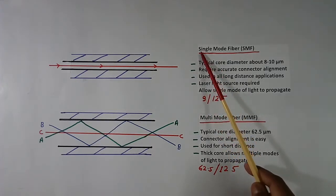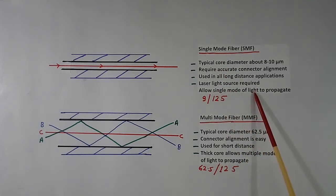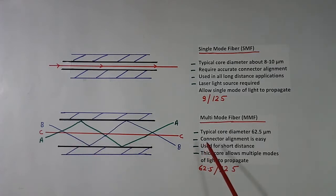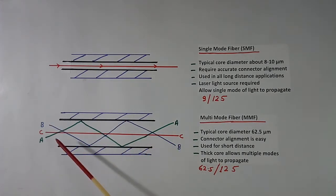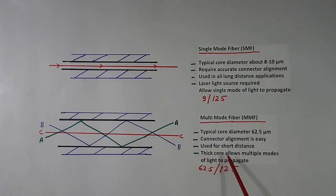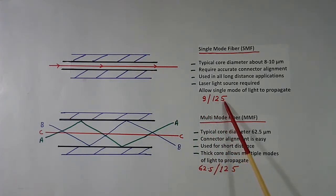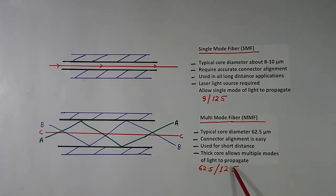Another difference: in single mode fiber, only a single mode of light propagates straight through. In multi mode fiber, because the diameter is more, light can travel in multiple paths — these are called modes. The thick core allows multiple modes of light to propagate. For notation, 9/125 means core diameter 9 micrometers and cladding diameter 125 micrometers; 62.5/125 means core diameter 62.5 and cladding diameter 125 micrometers.